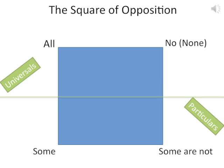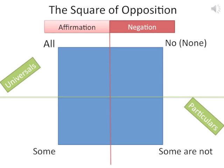Here's another division in the square of opposition. We have what are called the affirmatives — the affirmations — of our propositions, and we also have our negations. Under the affirmative column, you have the positive quantifiers: all of the category, or maybe some of the category — these are positive instances of that category.